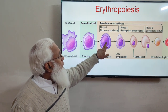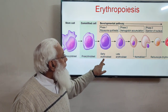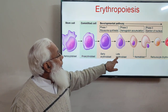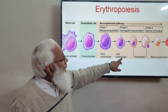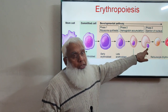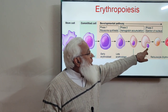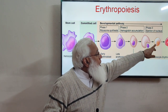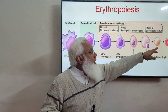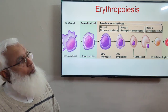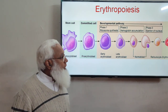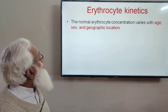The stages of RBC development are: pro-erythroblast (large cell), then early erythroblast with reduced size and condensed nucleus, then late erythroblast, then normoblast where the nucleus is evaginated and expelled, then reticulocyte where some network remains, and finally the mature RBC. These are the key stages of RBC formation.